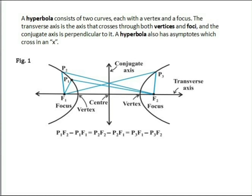The points at which the hyperbola intersects the transverse axis are called the vertices. We denote the distance between the two foci by 2c and the distance between the two vertices such that the length of the transverse axis is 2a and the length of the conjugate axis is 2b. A hyperbola also has asymptotes which pass through the origin and cross in an X shape.